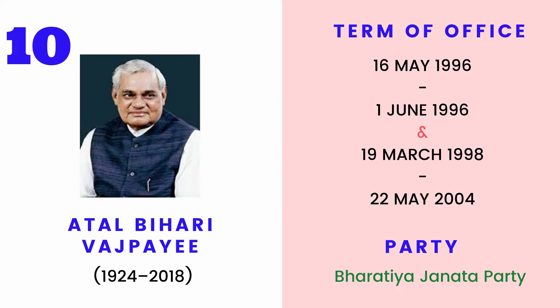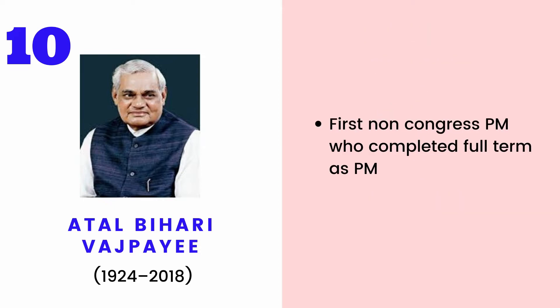Atal Bihari Vajpayee was an Indian politician, statesman and poet who served three terms as Prime Minister of India: first for 13 days in 1996, then for 13 months from 1998 to 1999, and finally for a full term from 1999 to 2004. A member of the Bharatiya Janata Party, he was the first non-Congress PM to complete a full term.